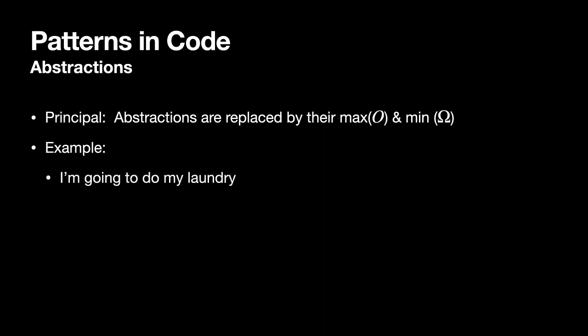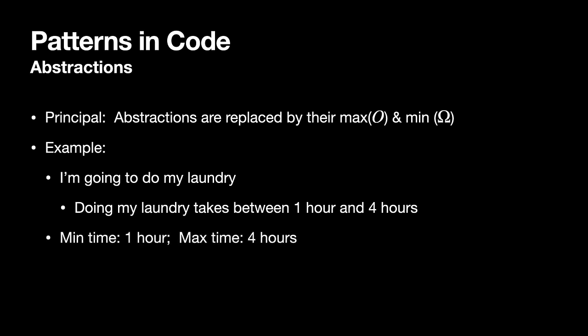Our third code concept is abstractions, which we've already been using even in this short discussion. The basic idea is that abstractions are replaced by their own internal maximum or minimum values. So as an example, an everyday example, I'm going to do my laundry. Doing laundry takes between one and four hours. So the abstraction is just this general concept, doing my laundry. We'll look at the coding concept here in just a second. But based on some pre-known information about this, a minimum and maximum, we will use those as we're trying to determine either the big O, which would be the worst case, the maximum, or the big omega, the best case, the minimum.